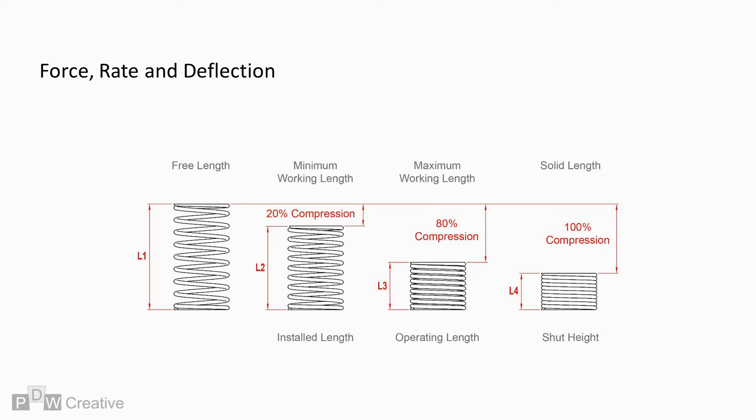Max working length is up to 80% compression. However, some manufacturers will work to 85% depending on spring material choice. Beyond 80%, loads fall off the linear path, and we will go into what this means in the following stress videos. Solid length is the maximum compressed length when all coils are touching. It is sometimes known as the shut height.